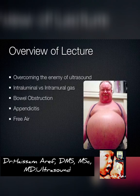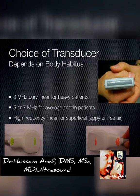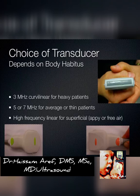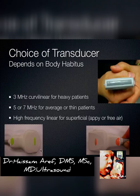We can also see bowel obstructions, appendicitis, and sometimes even free air. When you look at the bowel with ultrasound, like everywhere else in the body, you want to use the highest possible frequency for the best resolution as long as you can penetrate to the depth of interest. Usually for the bowel — appendicitis and such — we use the linear probe, which gets us the answer almost all the time. Occasionally we use the lower frequency curvilinear probe down around 3 megahertz if we have to.